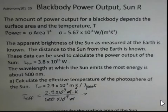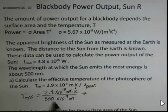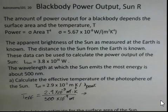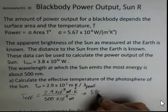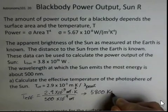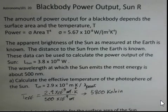So now we'll take 2.9 times 10 to the minus 3. We'll divide by 500 times 10 to the minus 9. You should repeat that calculation on your calculator and approximately we get 5,800 Kelvin. That's our effective temperature for the photosphere of the sun based on using the peak wavelength and assuming the sun is a blackbody.